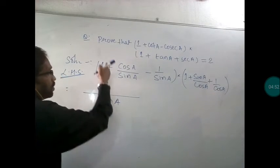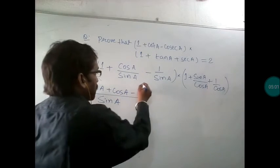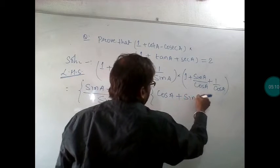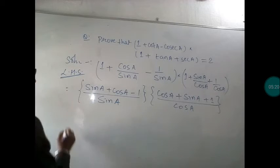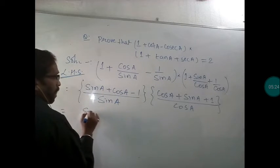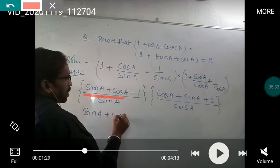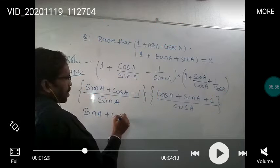In the first bracket, taking LCM as sin A, the numerator becomes sin A plus cos A minus 1. This whole expression is multiplied with the second bracket, where the LCM is cos A, giving a numerator of cos A plus sin A plus 1. Now notice something very important: sin A plus cos A appears in both parts — one with minus 1 and one with plus 1. This can be written in the form of A squared minus B squared, where sin A plus cos A is A and 1 is B. So algebraic identities are also working here.